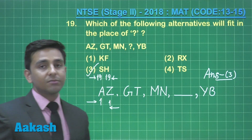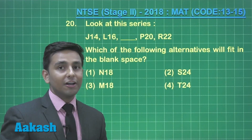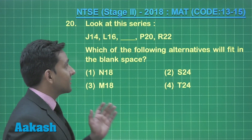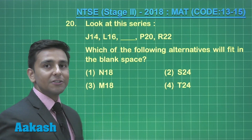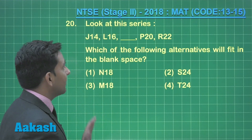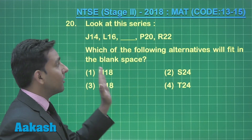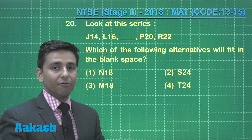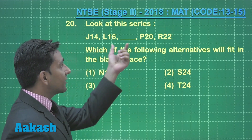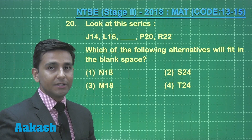Now let us move forward to question number 20. This question is based on an alphanumeric sequence. First of all, we will find the pattern in the given numbers, then we will find the pattern in the given alphabets. Then we can easily predict the missing term of the given sequence.